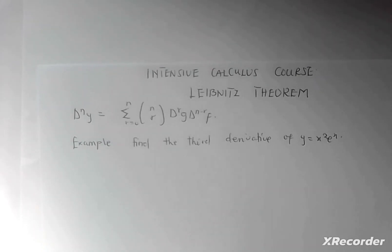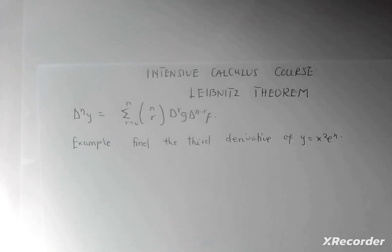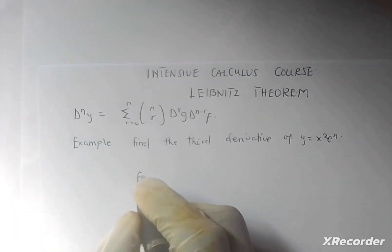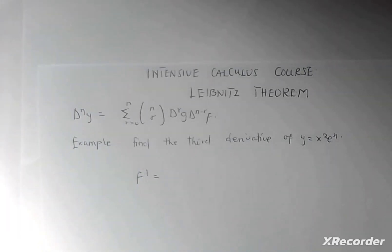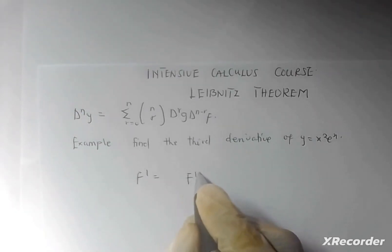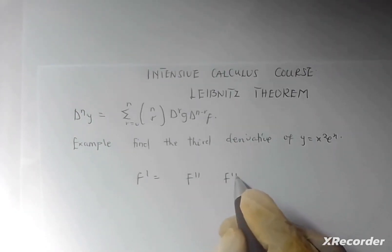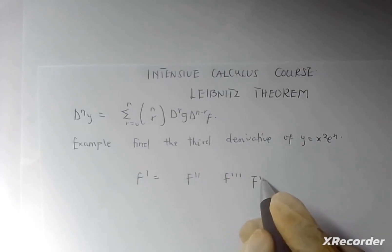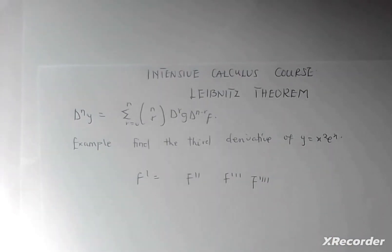In higher order derivatives, it's just for you to differentiate a particular function for a number of times. So the first derivative means f prime — you differentiate with respect to the particular variable only once. Then you have f double prime, f triple prime, and so on, depending on the number of times you've been asked to.